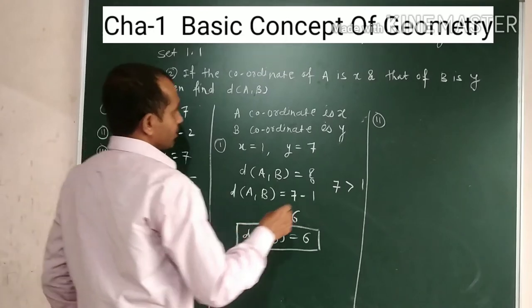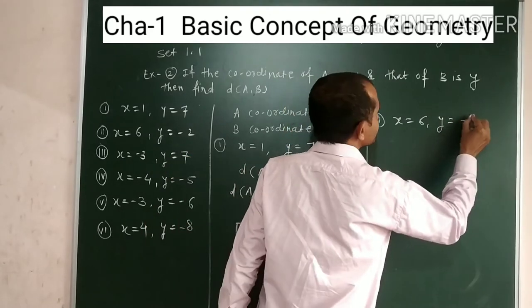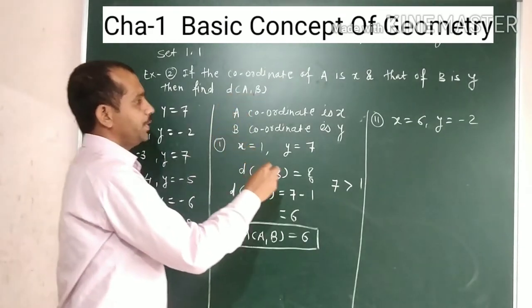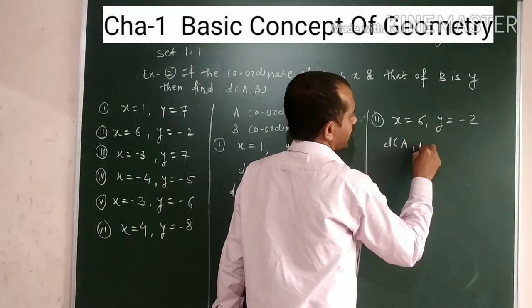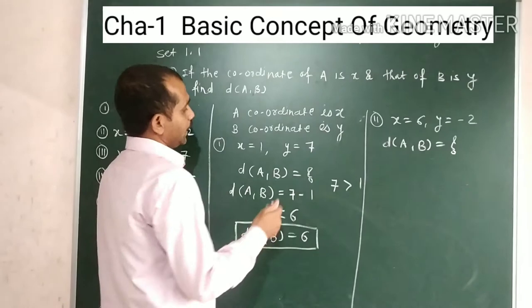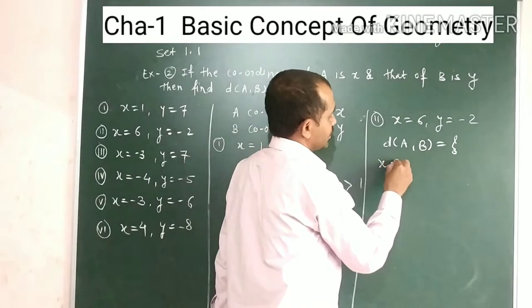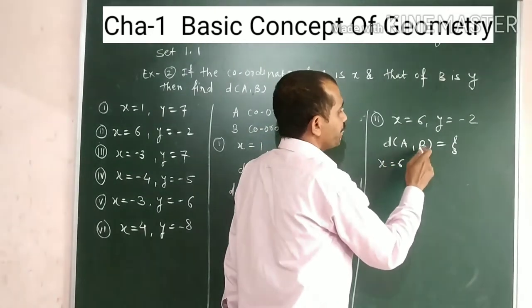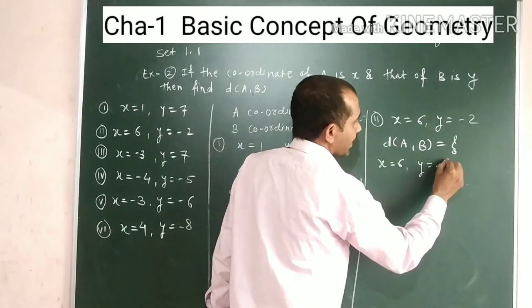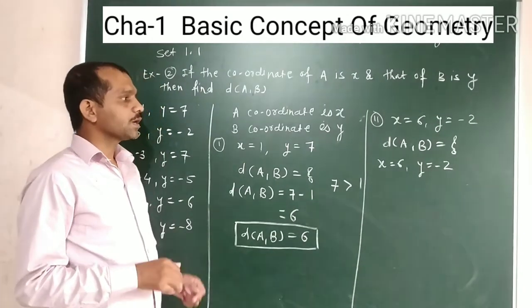In example number 2, x is equal to 6 and y is equal to minus 2. Find the distance between A and B. The coordinate of A is x and x value is 6. The coordinate of B is y and y value is minus 2.